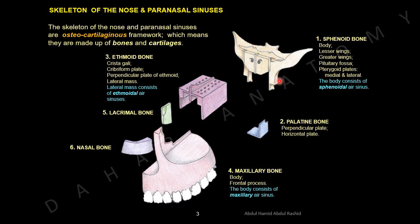The first bone is the butterfly-shaped sphenoid bone, located at the central part of the base of the skull. The sphenoid bone consists of a body. Above the body is a pair of small wings called lesser wings of the sphenoid, and behind each lesser wing is a bigger wing called the greater wing. Above the body is a shallow area where the pituitary gland is located, called the pituitary fossa. Below the body on each side is a pair of flat bones called the medial and lateral pterygoid plates.